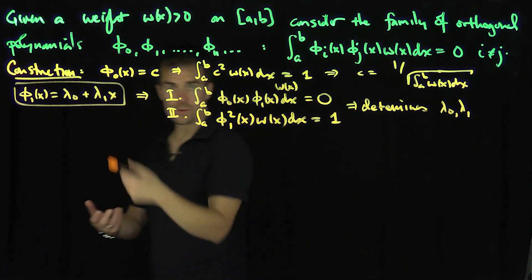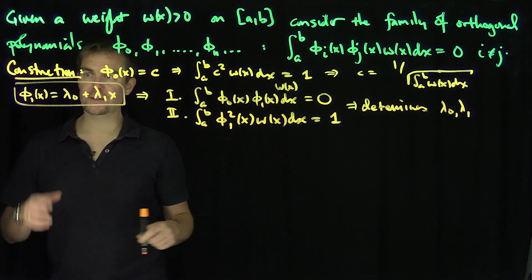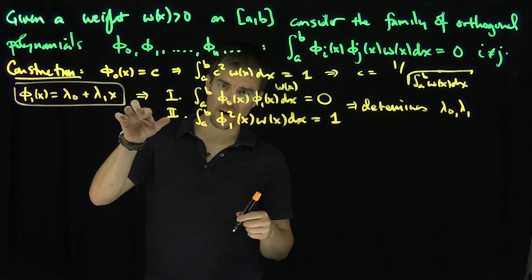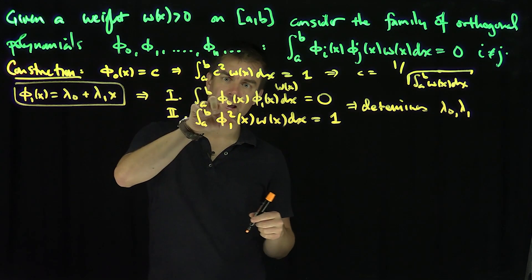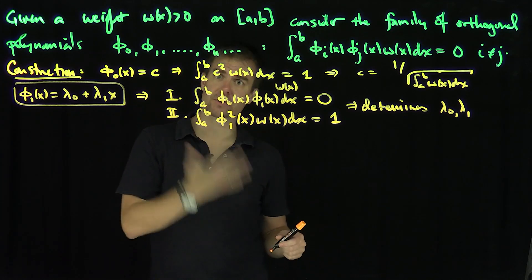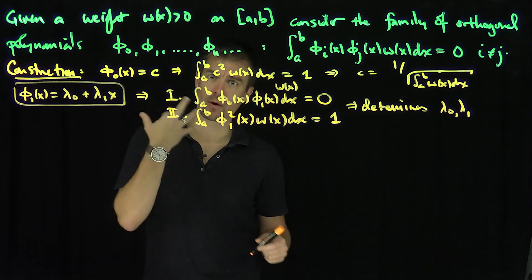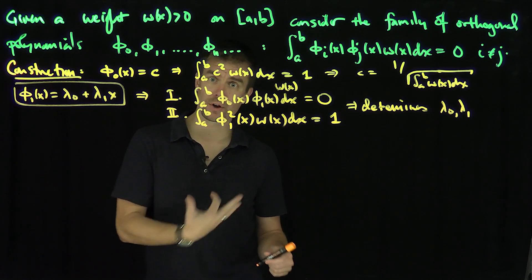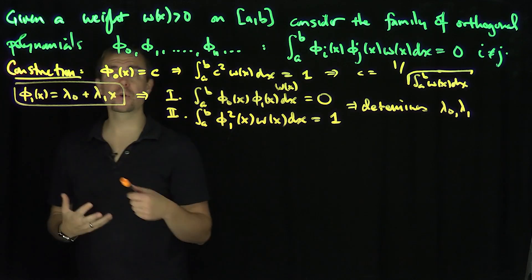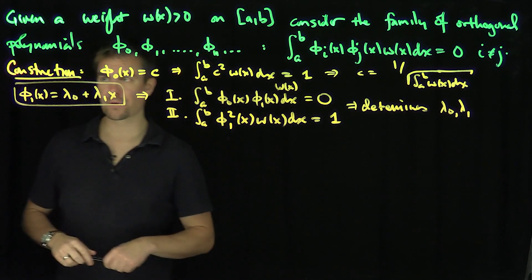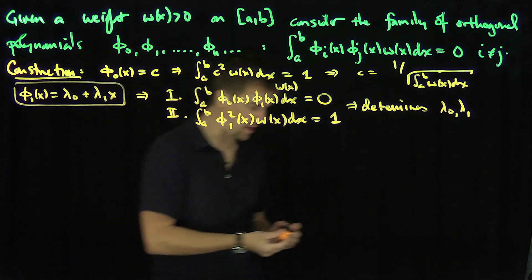And of course, we can continue this process. The next polynomial will have coefficients σ₀, σ₁, σ₂, with a condition with φ₀, a condition with φ₁, and a normalization condition — that's three conditions for three unknowns. So we'll always have enough conditions to find the coefficients uniquely. Now I would like to relate these coefficients to a recursion relationship for the orthogonal polynomials.